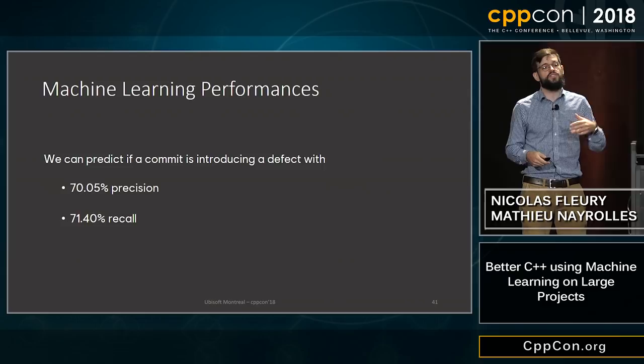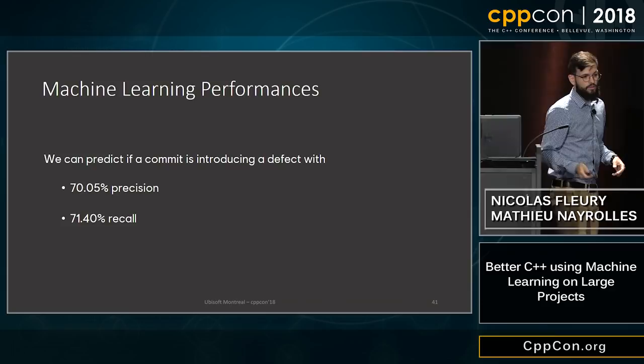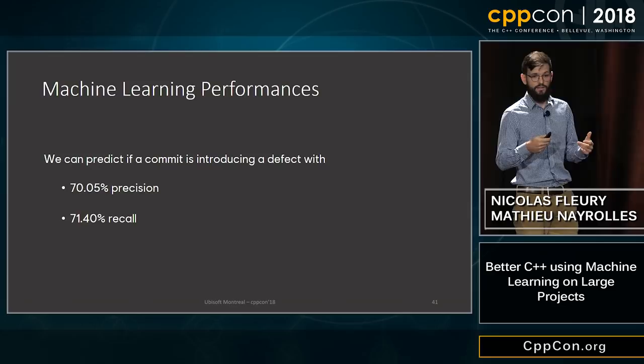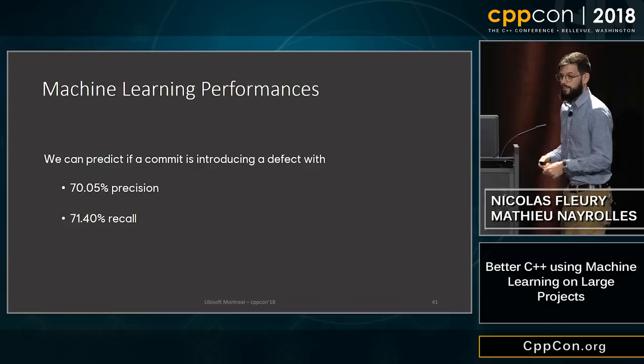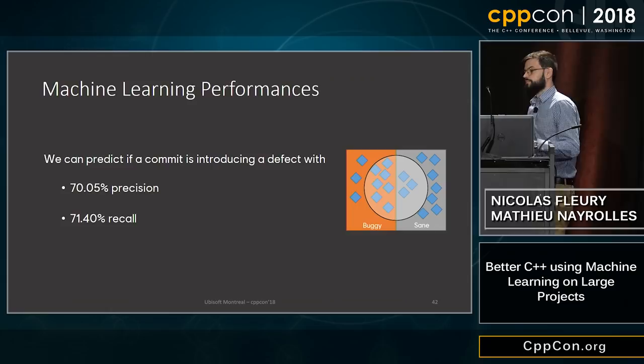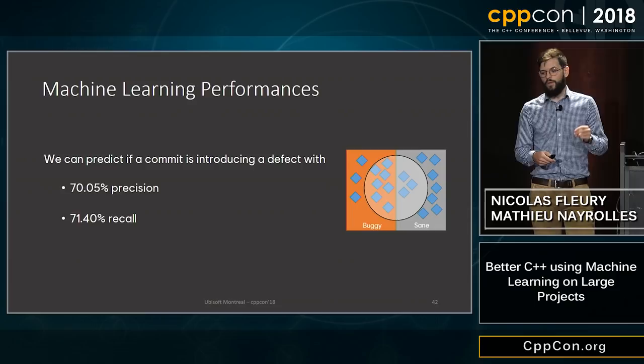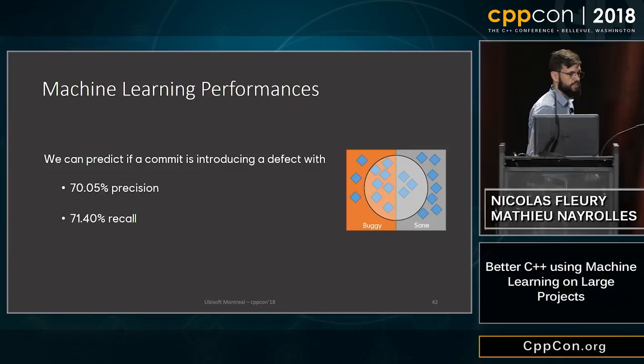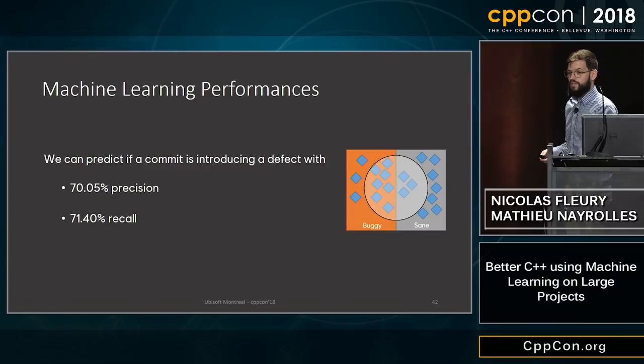Recall is: of all the commits that did introduce a bug, how many did we manage to flag? We managed to flag 71% of commits that introduced a bug. With 70% precision and 70% recall on a simple dataset of 10 buggy and 10 sane commits, you correctly flag 7 buggy commits out of 10 at the cost of misclassifying 3 sane commits.